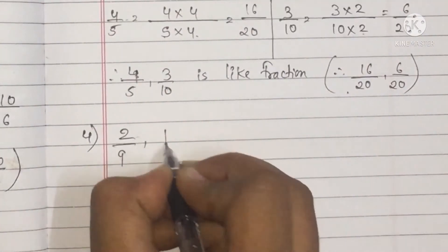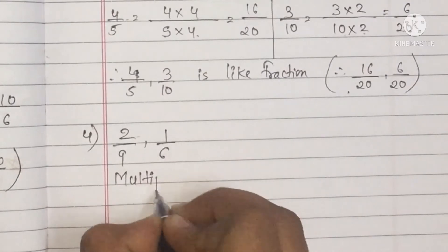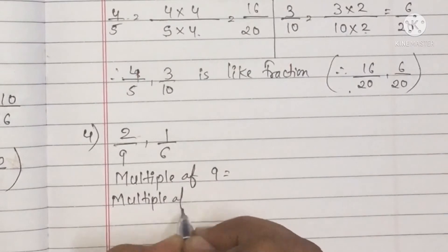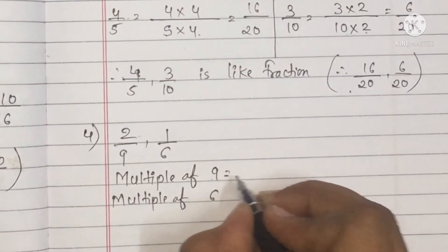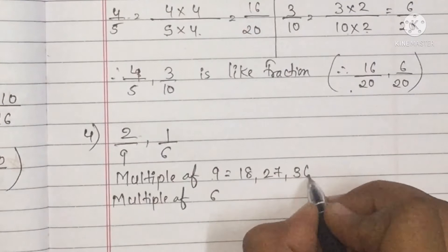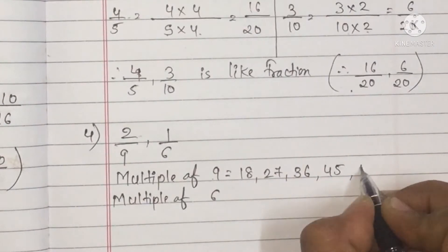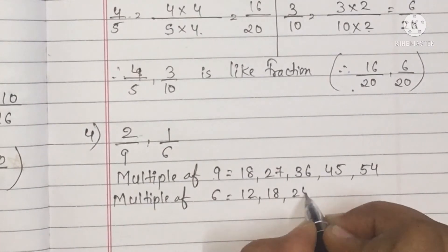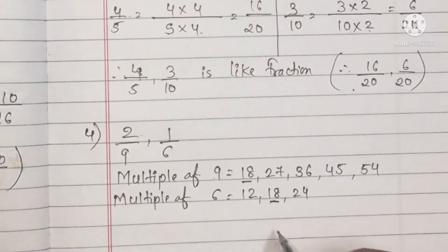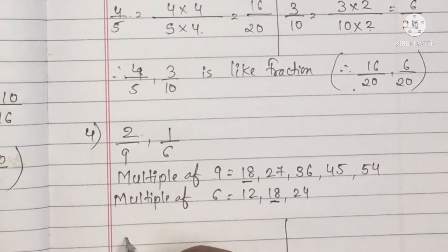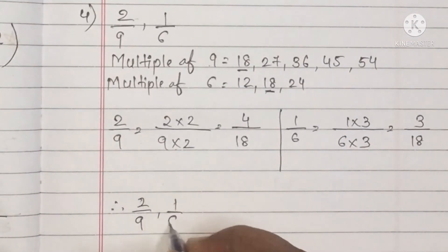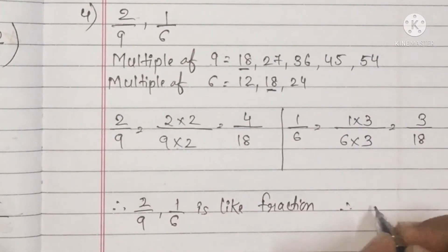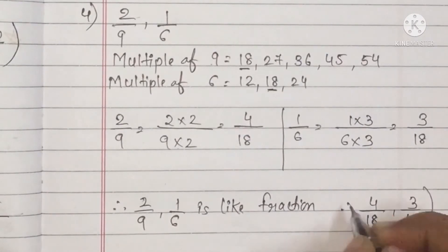Question number 4: 2 upon 9 and 1 upon 6. We find the common multiple of 9 and 6. Multiples of 9: 9, 18, 27, 36, 45, 54. Multiples of 6: 6, 12, 18 — so 18 is common. Multiply 2 upon 9 by 2 and 1 upon 6 by 3. We get 4 upon 18 and 3 upon 18, which are like fractions.